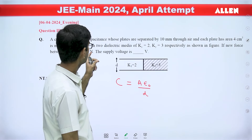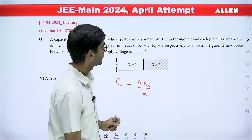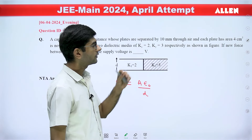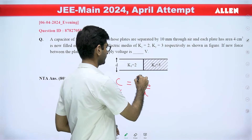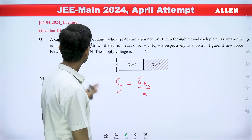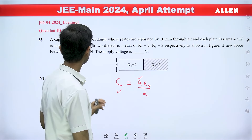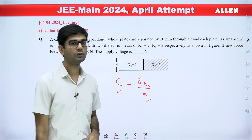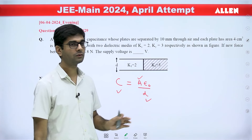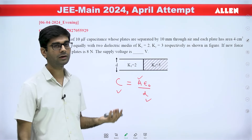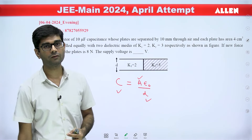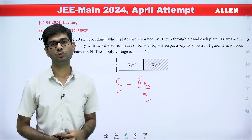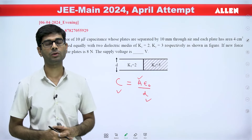Here the capacitance is 10 microfarad if we consider air, so the value of capacitance is given to us. Area is also given to us, D is also given to us — the plates are separated by 10 mm. If we consider these three values which are given to us, we can find the value of ε₀, but the value of ε₀ which comes out using this expression does not match the known value of ε₀, which is 8.85 × 10⁻¹².